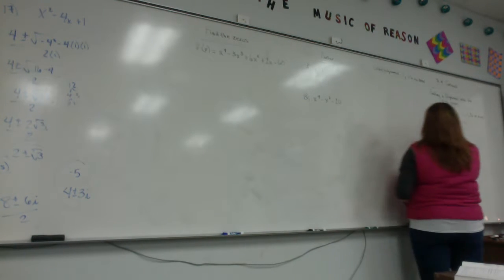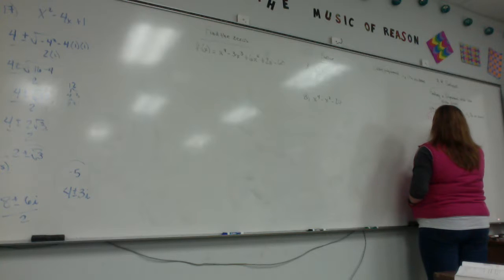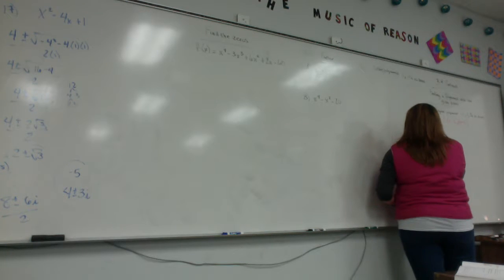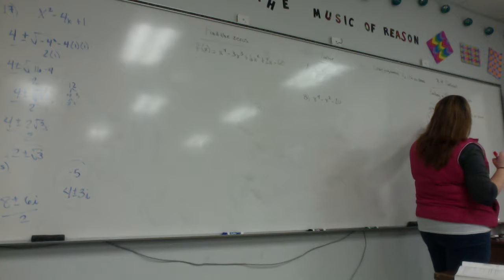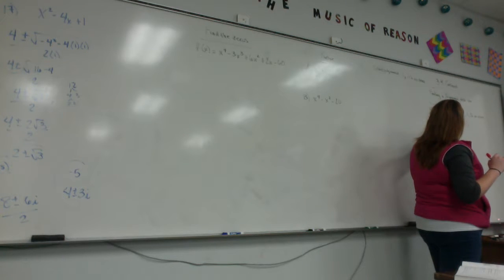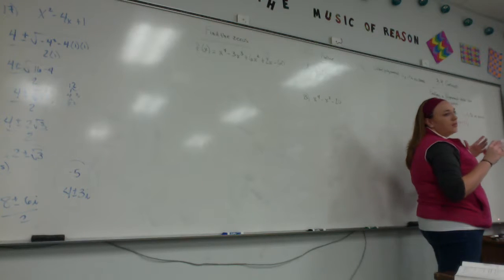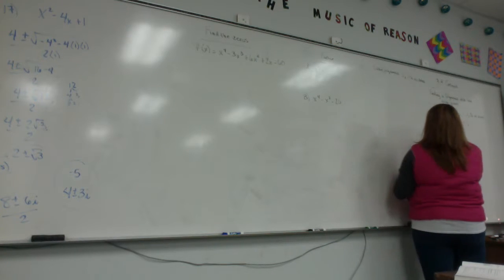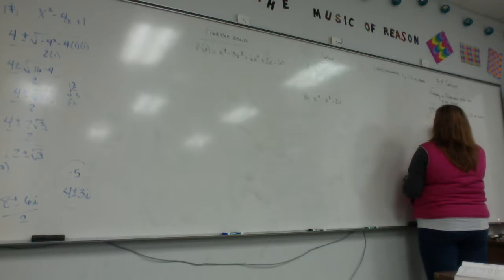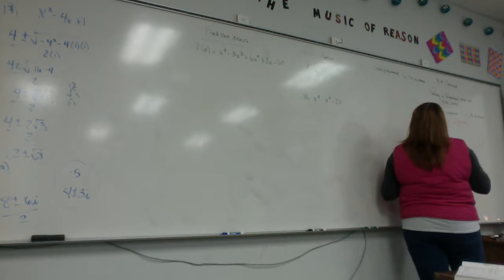I'll start with FOILing this easy one, and I'll get x squared. I'm going to skip FOILing the middle part because they're going to cancel — x times negative 1 is negative x, and x times 1 is positive x, so they cancel. I don't need to do that extra work. I can just FOIL the outside and say x squared minus 1.